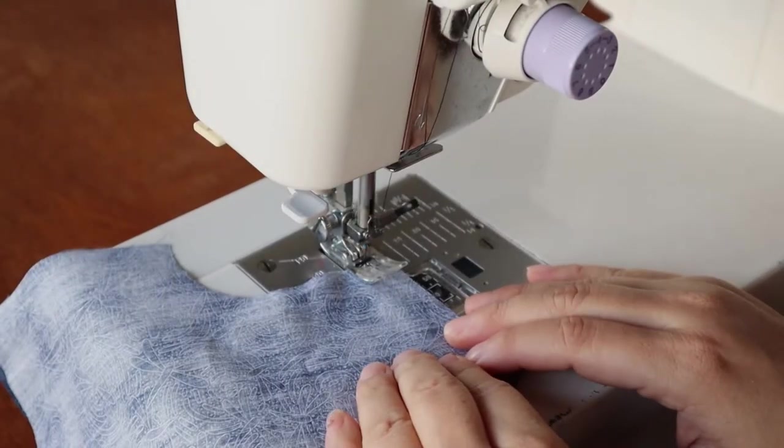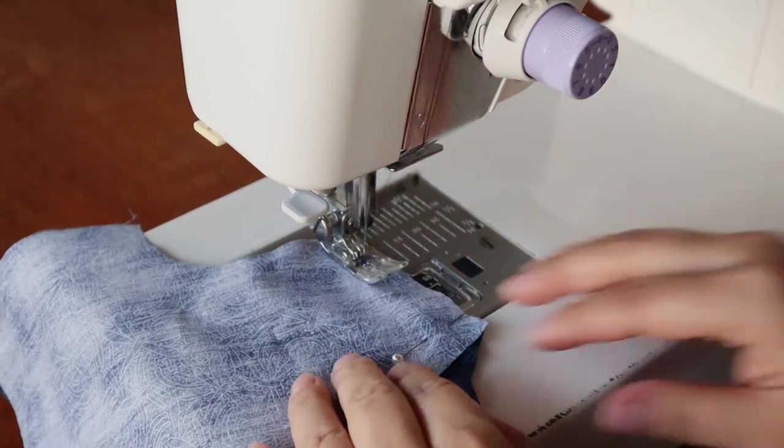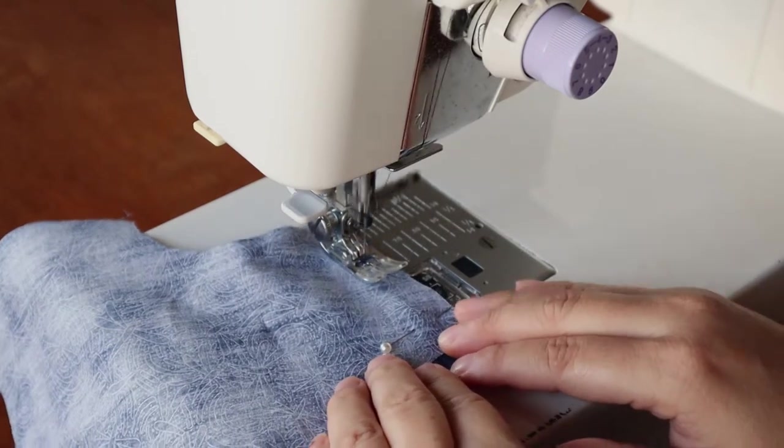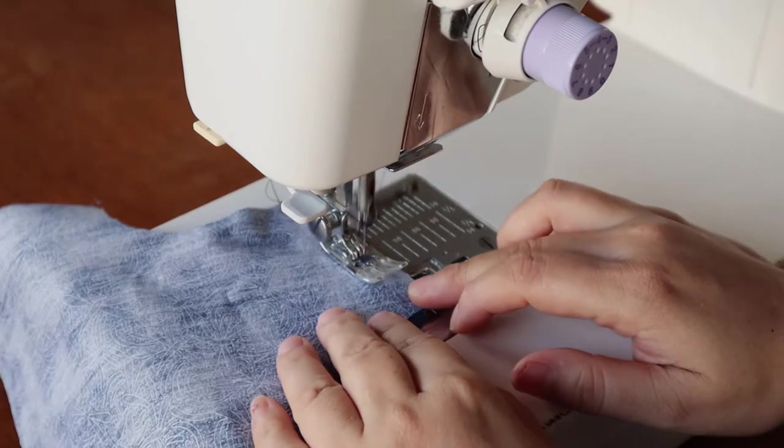So first we're going to attach the shoulders for the bodice. You have to do both sides, forward and backwards stitch at 3/8 of an inch or one centimeter seam allowance. Here I have a pin sideways. The fabric's not slippery enough, you might not even need pins.